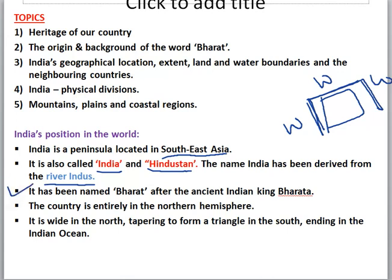India has been named Bharat after the ancient Indian king Bharata. The country is entirely in the northern hemisphere. It is wide in the north, tapering to form a triangle in the south, ending in the Indian Ocean. If you look at the position of India on the world map, you will see it is wider in the north and forms a triangular shape ending in the Indian Ocean.